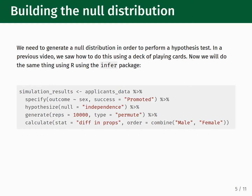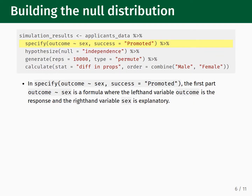We begin by piping the dataset into the specify function, which requires two inputs. The first input is where you specify the response variable and the explanatory variable using a formula syntax: outcome tilde sex. The words outcome and sex are column names in the dataset. The word on the left side of the tilde, outcome, is the response variable; the word on the right, sex, is the explanatory variable. The second input, success equals promoted, is used when the response column contains categorical variables, indicating that a value of promoted will be counted as a success.